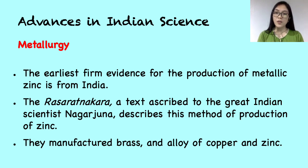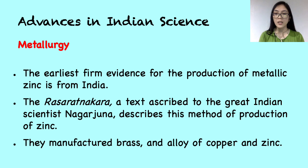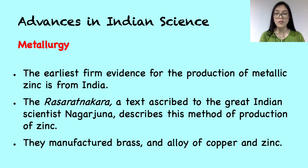Indian metallurgists have also made major contributions that deserve their place in the metallurgical history of the world. Based on archaeological excavations at the Zawar area in Rajasthan, Indians knew how to isolate zinc by about the 1st century AD, while Europeans had learned this process only during the early 19th century AD. The Rasaratna Nakara, a text ascribed to the great Indian scientist Nagarjuna, describes this method of production of zinc. India also contributed significantly to modern metallurgical advances of zinc and high-carbon steel, and in the development of metallurgical study leading to the Industrial Revolution in Europe. The isolation of zinc was also accompanied by other developments such as the manufacture of brass, an alloy of copper and zinc.